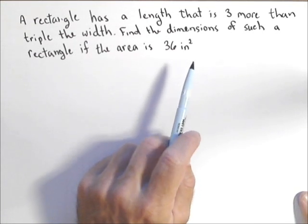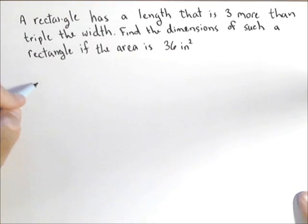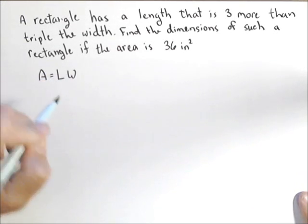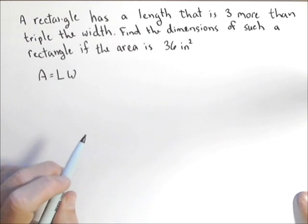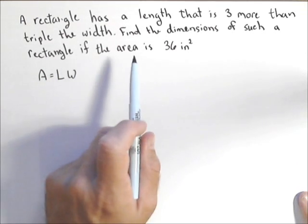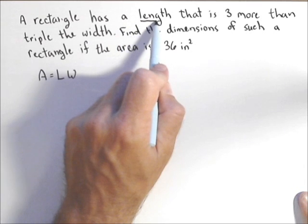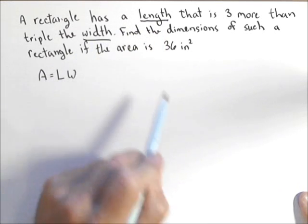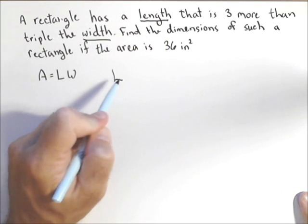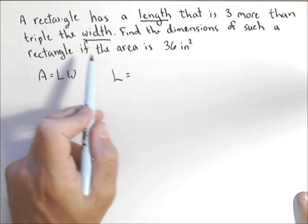So the first thing we want to do is think about what is area of a rectangle. Well, area of a rectangle is equal to length times the width. Now, they gave us enough information to find a relationship between the length and the width. In fact, they told us that the length is three more than triple the width.